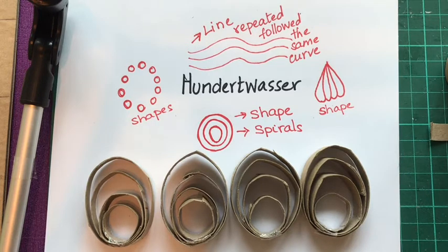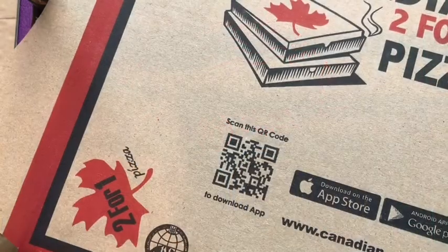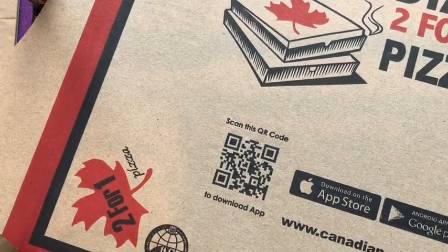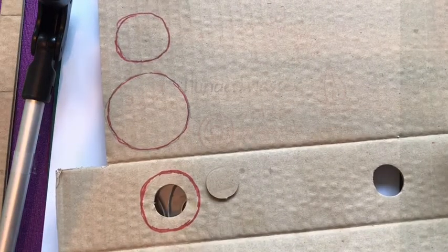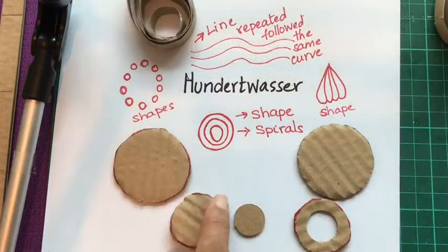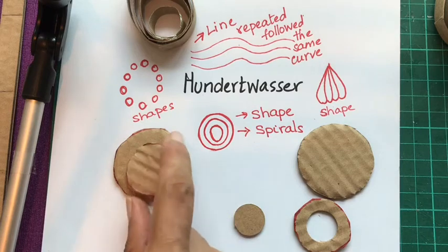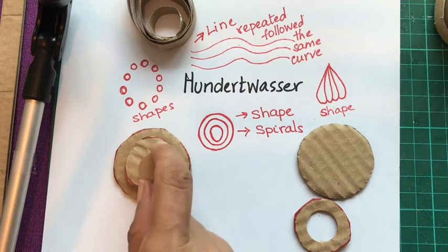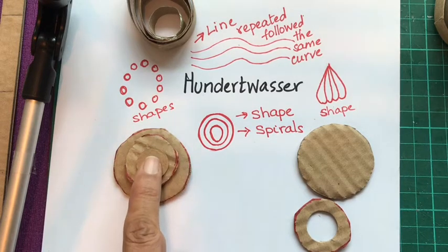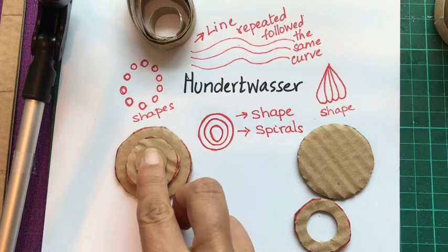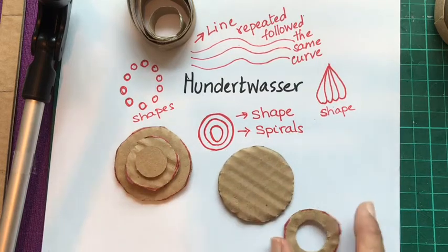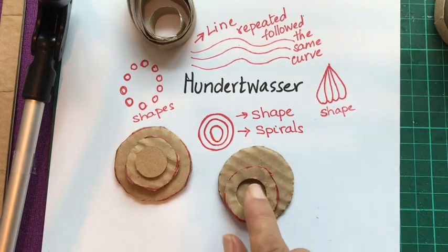Pizza boxes are very useful — they have little circles in them which you can use. I've created circles of different sizes to create a Hundertwasser-inspired motif. You could also create negative space, like this example, which works well too.